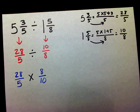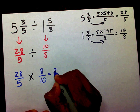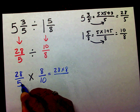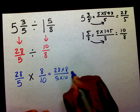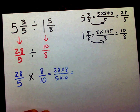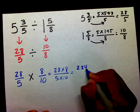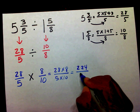Now I need to multiply across: twenty-eight times eight in the numerator, and five times ten in the denominator. Twenty-eight times eight is two hundred and twenty-four, and five times ten is fifty.